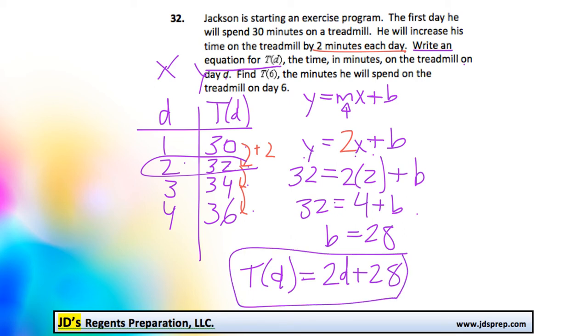Now the next second part we need to do is find T of 6, the minutes he'll spend on the treadmill on day 6. Now, we could figure this out pretty quickly just finishing this table of values. We could be adding 2 here and 2 again. I mean, let me get the answer of 40.